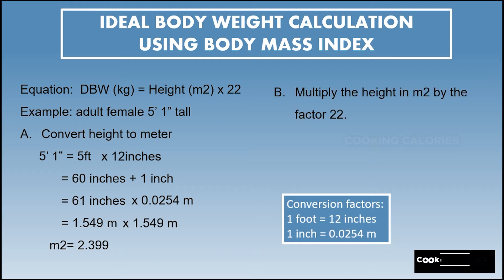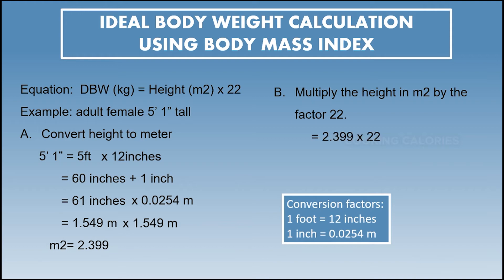The next step is to multiply the height in meters squared by the factor 22 — again, 22 is a constant number. So 2.399 meters squared multiplied by 22 equals 52.778, or we can round that off to 53 kilograms.